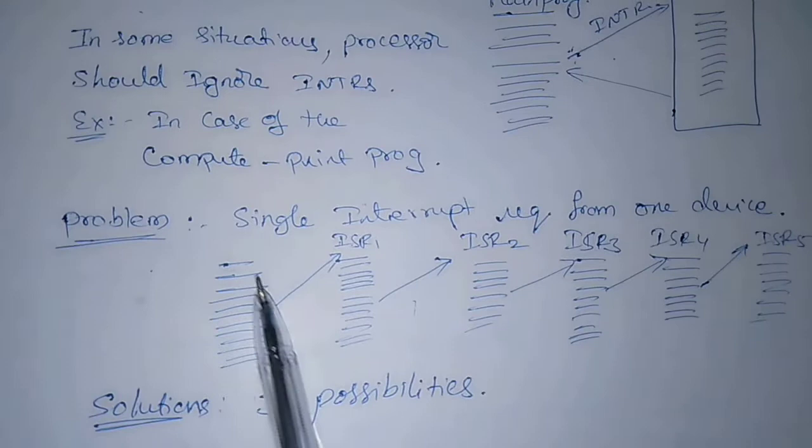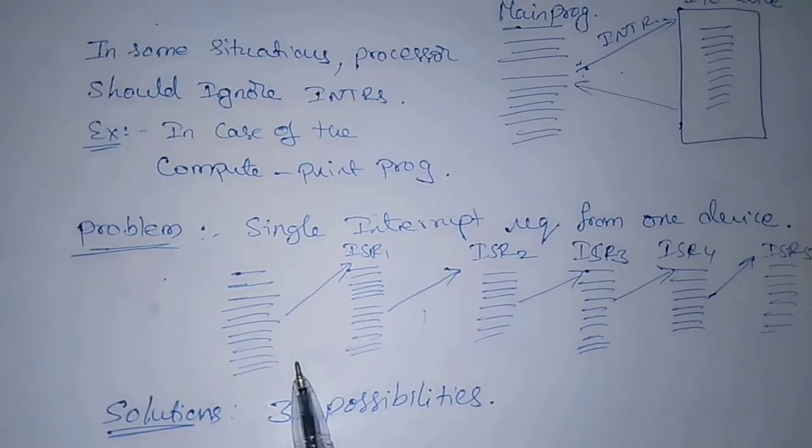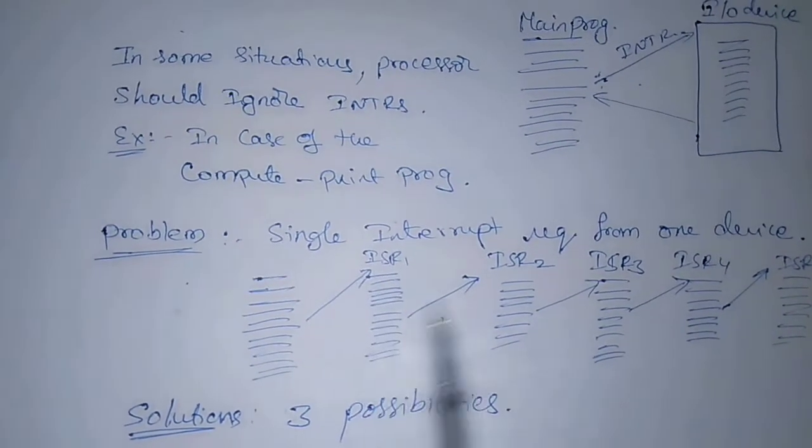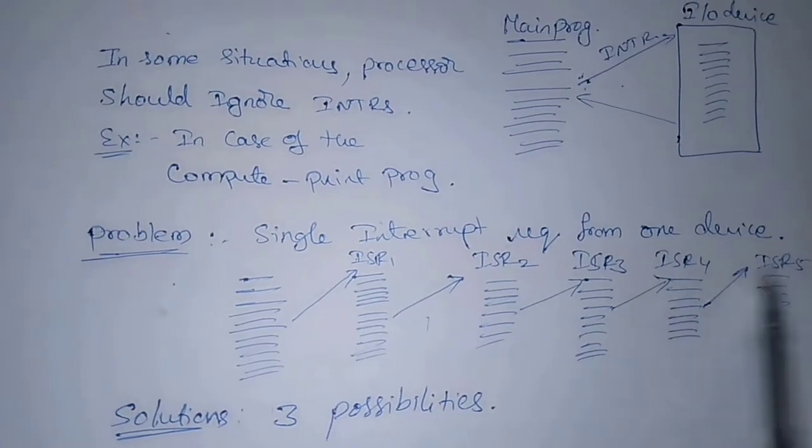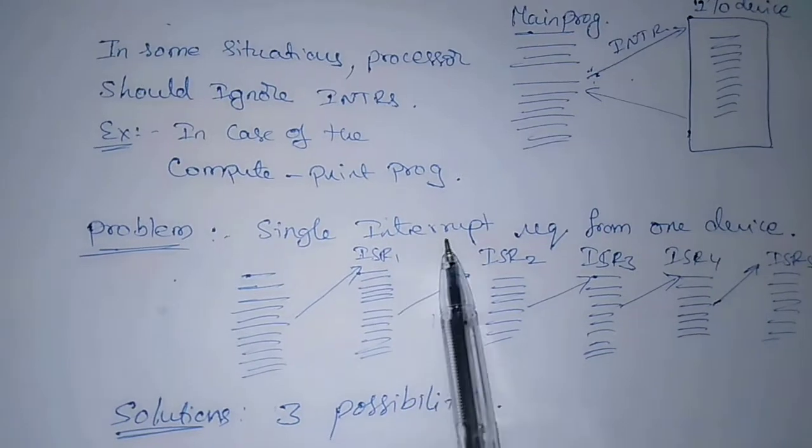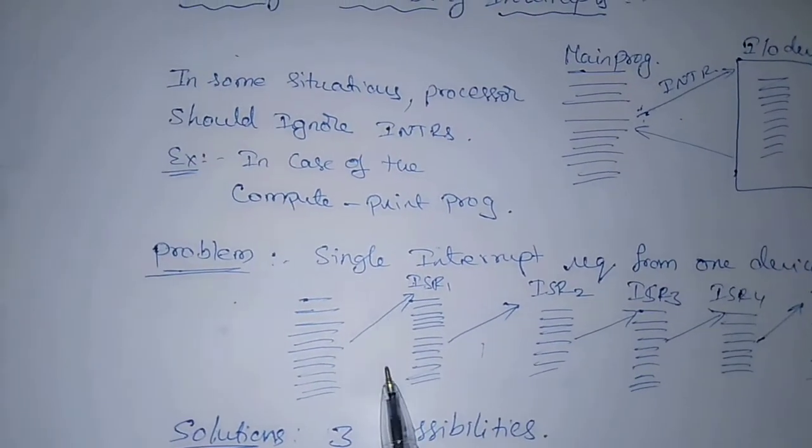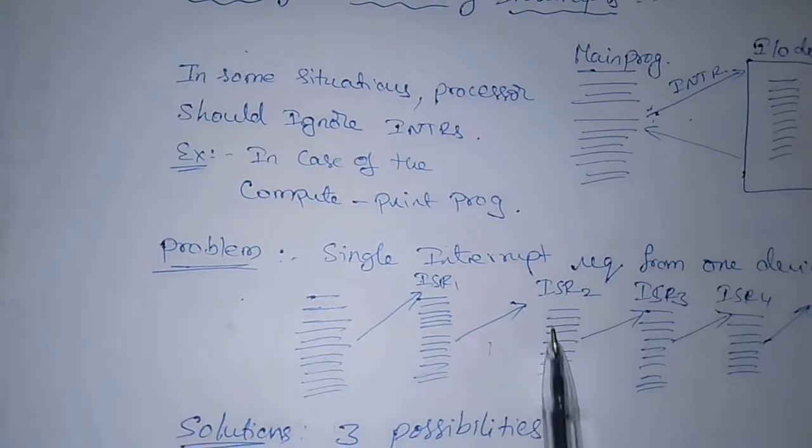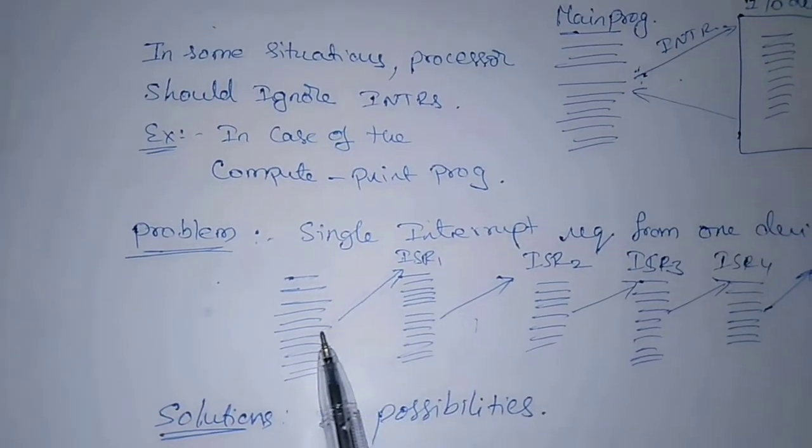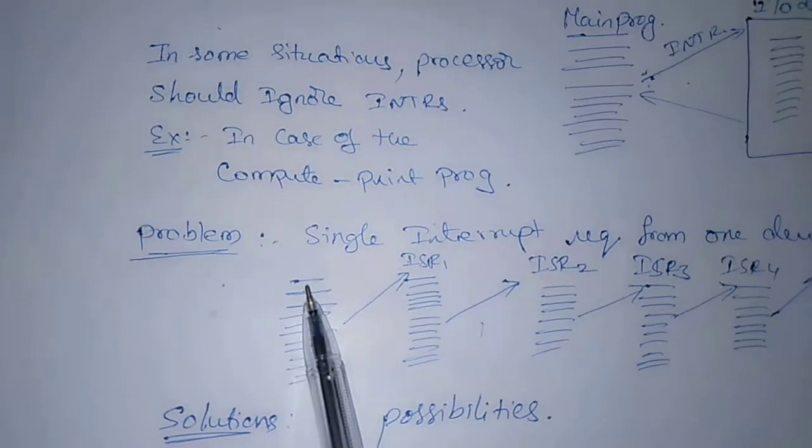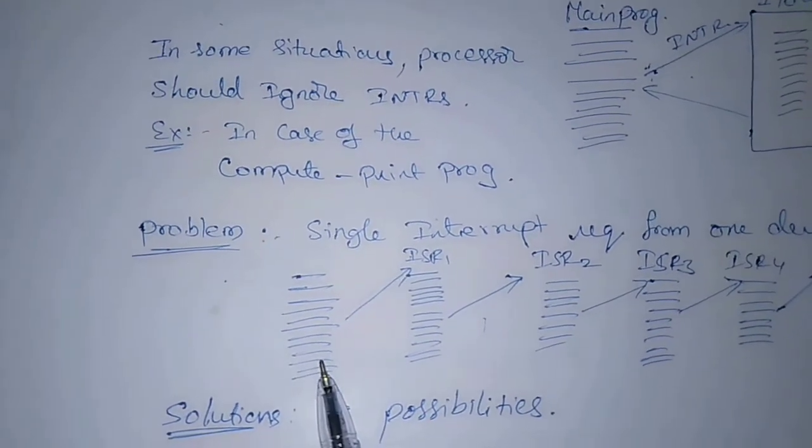Let us consider the case of single interrupt request from one device. Here, suppose processor is executing the main program. So this is ISR1, ISR2, ISR3, ISR4, ISR5 and so on. Here, interrupt request. This belongs to IO device 1, this belongs to IO device 2 and so on. This interrupt request occurs during the execution of main program.